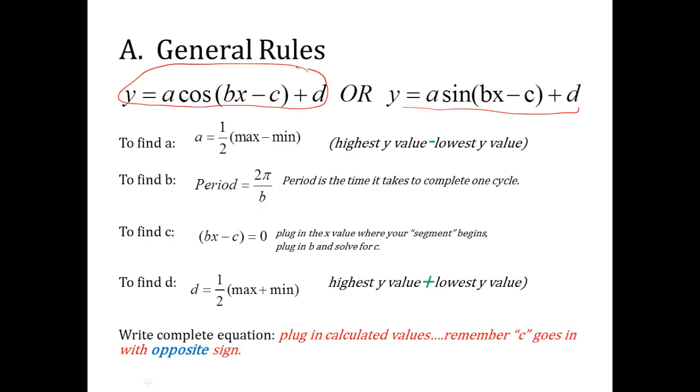A cosine bx minus c plus d. It's the same for sine. You know the values of a, b, c, and d. We've seen this as we've done transformations. So what you're going to do is look at a graph and try to identify what is a. To find what a is, you're going to take the maximum y value, subtract the minimum y value of the graph, and then divide by 2.